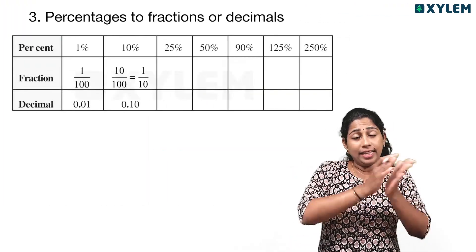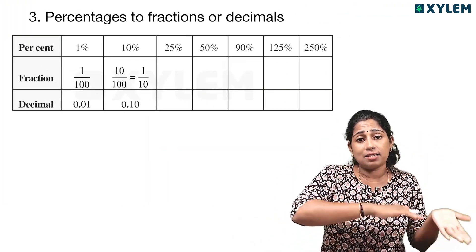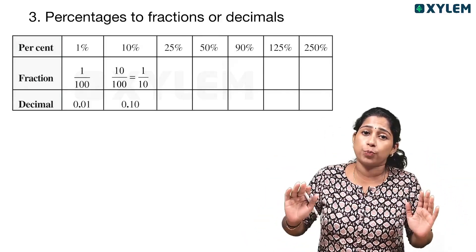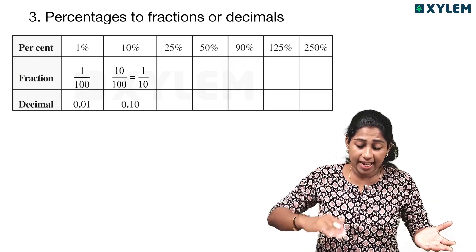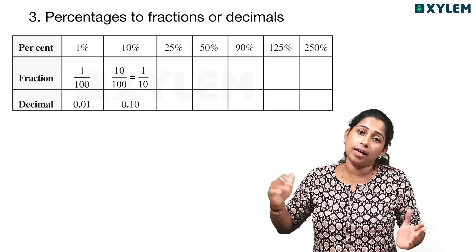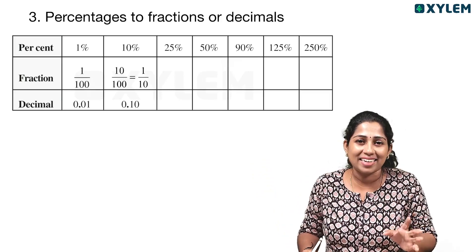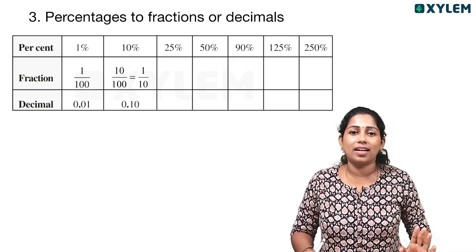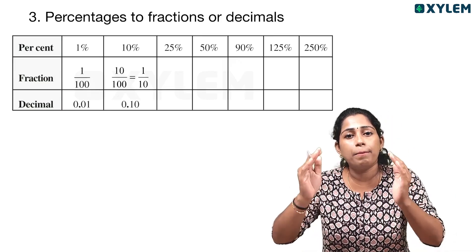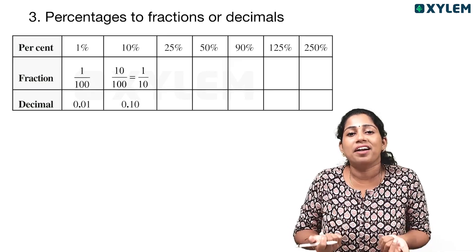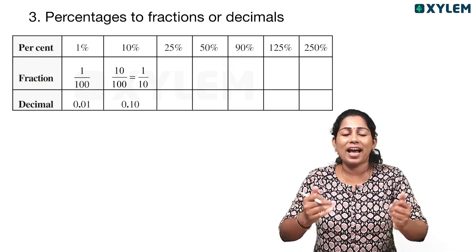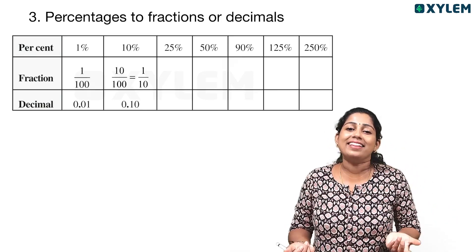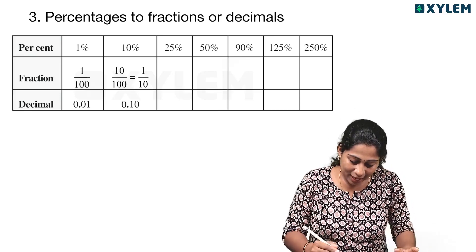Now we are going to study percentage to decimal and fraction conversion. It's very easy. One percent is 1 by 100 as a fraction. This is a fraction. This is 0.01 as a decimal. That's what the decimal is. Correct — this is very easy.